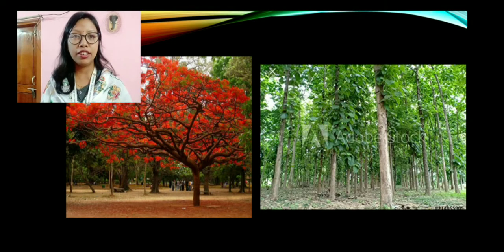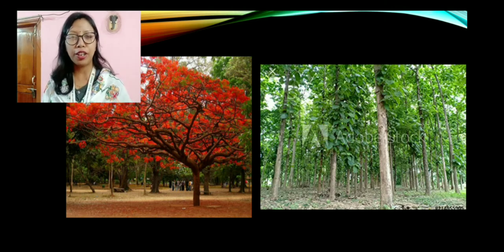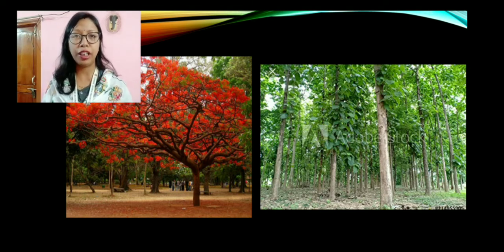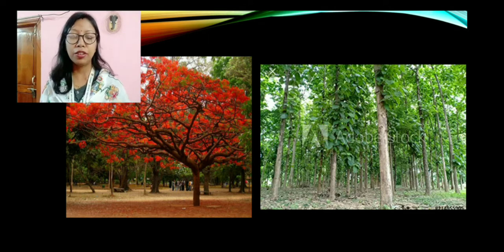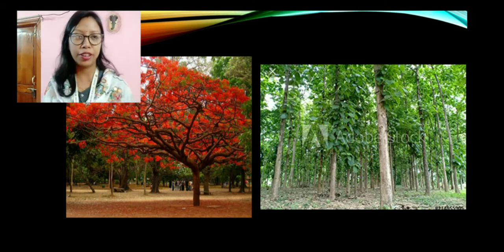Here are some pictures. The first picture is the Gulmohar and the second is the teak tree. Gulmohar is the Krishna Sura — during spring season you will observe it grows a lot, this red-colored tree. Whenever you are on a journey somewhere, you will see on the roadside this Krishna Sura, the Gulmohar, flowers a lot. The next one is the teak.